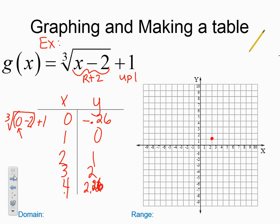So now let's go plot. 0 down 0.26, 1, 0, 2, 1. We already have 3, 2. And then 4, 2.6.